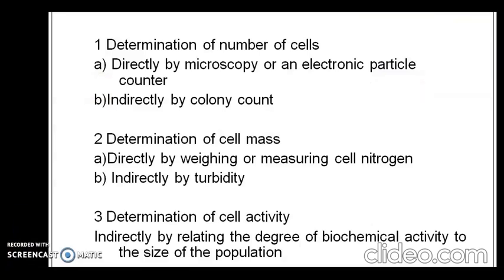The measurement of bacterial growth can be divided into three categories. The first is the determination of number of cells, which consists of a direct method, by microscopy or electronic particle counter, and an indirect method by colony count. The second category is determination of cell mass, with direct methods including weighing or measuring cell nitrogen, and indirect method by measuring turbidity. The third category is determination of cell activity, done by indirect method related to the degree of biochemical activity of the population.